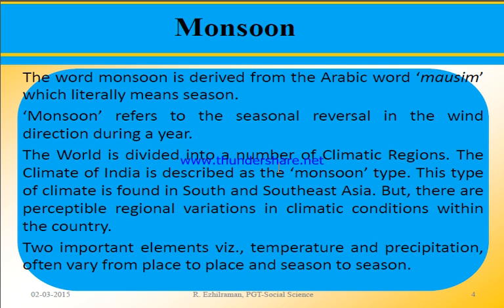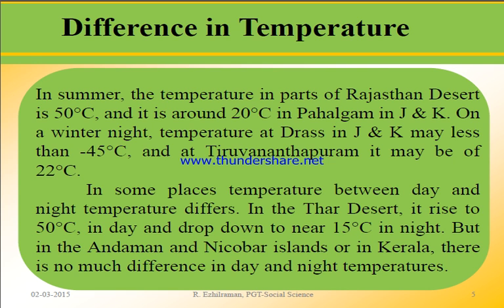The world is divided into a number of climatic regions. The climate of India is described as the monsoon type. This type of climate is found in South and Southeast Asia, but there are perceptible regional variations within the country. Two important elements — temperature and precipitation — often vary from place to place and season to season, due to factors like latitude, altitude, and longitude.